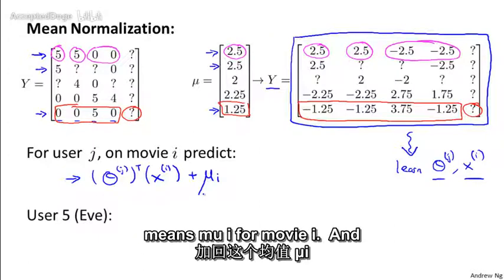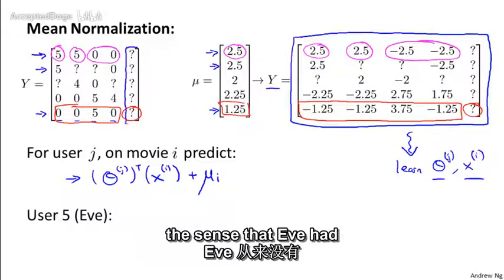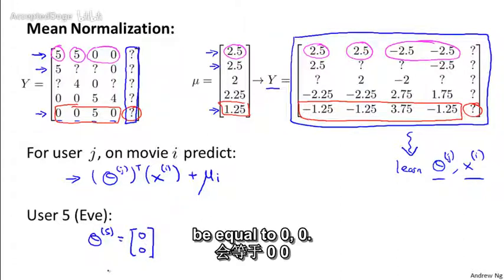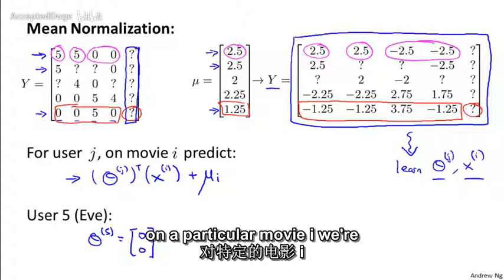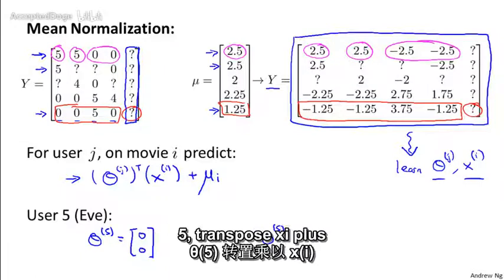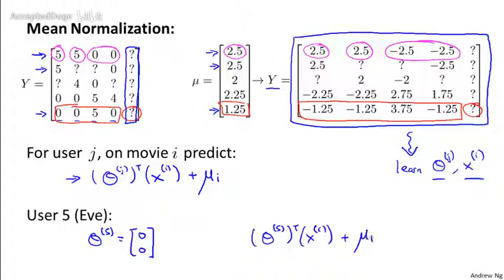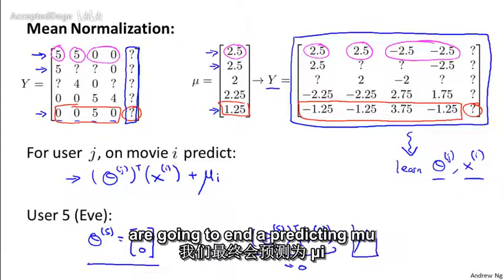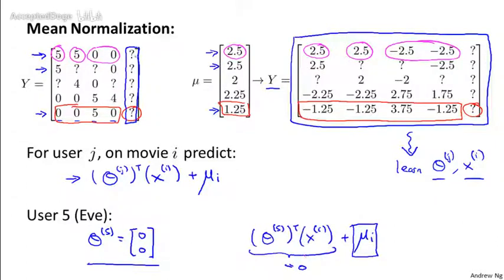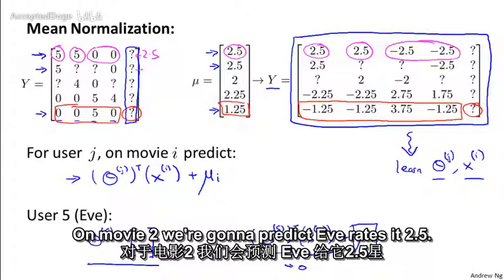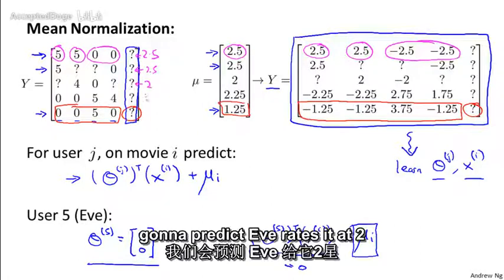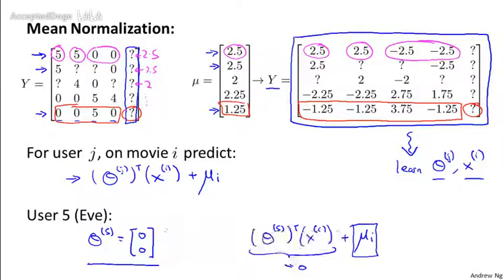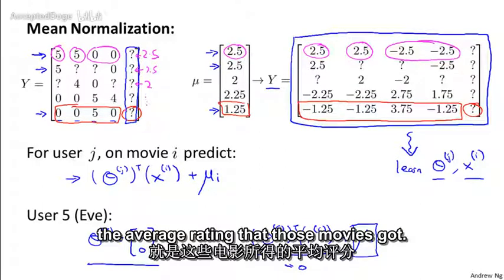And so specifically for user five, which is Eve, the same argument as the previous slide still applies in the sense that Eve had not rated any movies. And so the learned parameter for user five is still going to be equal to zero, zero. And so what we're going to get then is that on a particular movie i, we're going to predict for Eve theta five transpose xi plus mu i. And this actually makes sense. It means that if Eve hasn't rated any movies, we're going to predict for each of the movies the average rating that those movies got.